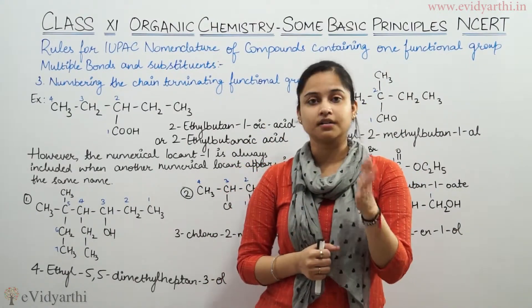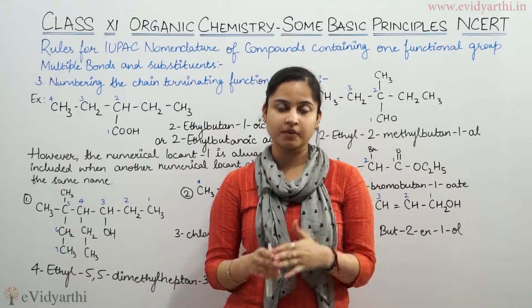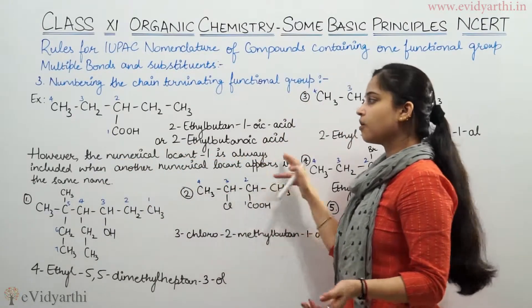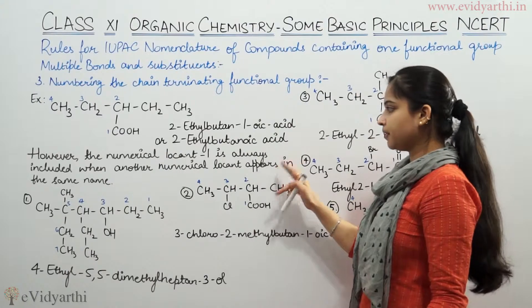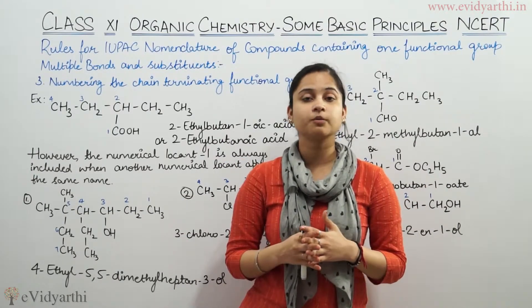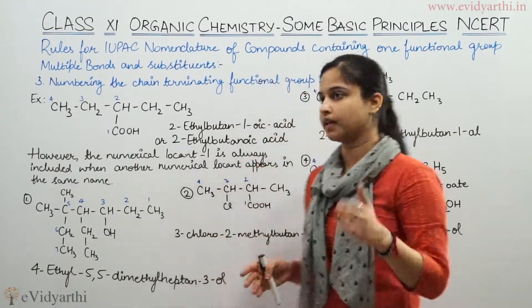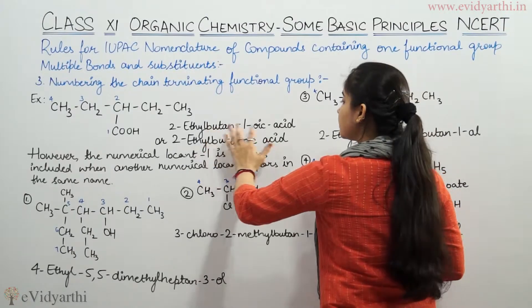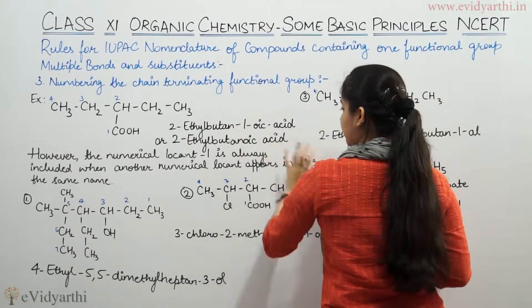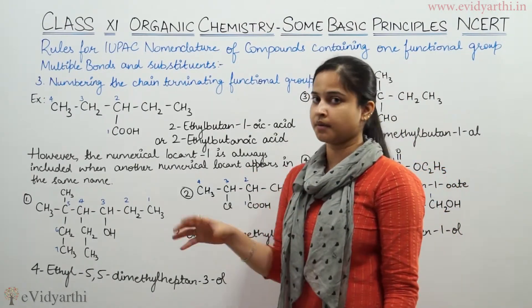If I have no other set of locants in the name, then I can remove the locant '1'. But if I have another set of locants appearing in the same name, then I must keep the '1'. In this case, it is butane-1-oic acid and there is only one locant, so I can remove the '1'.